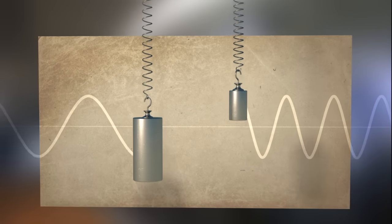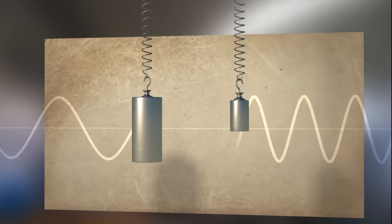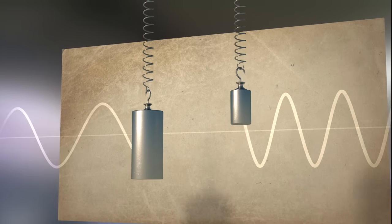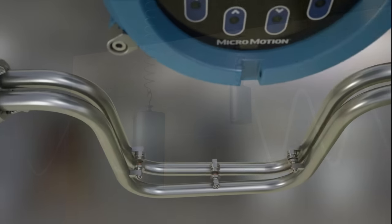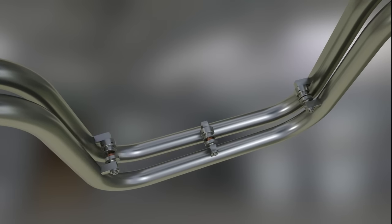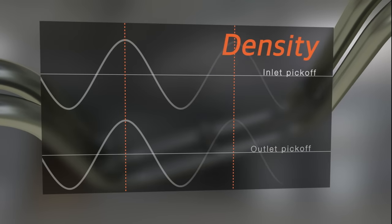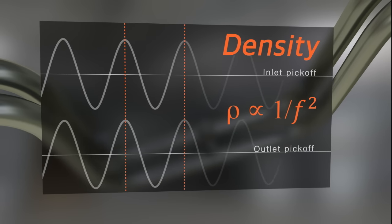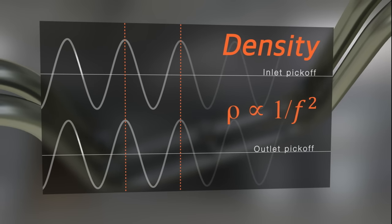In the Coriolis sensor, the tubes correspond to the spring. The mass of the tubes and the fluid they contain correspond to the weight at the end of the spring. The stiffness of the flow tubes remains essentially constant. Therefore, the mass and density of the fluid contained in the fixed volume of the flow tubes is the only variable affecting the frequency.